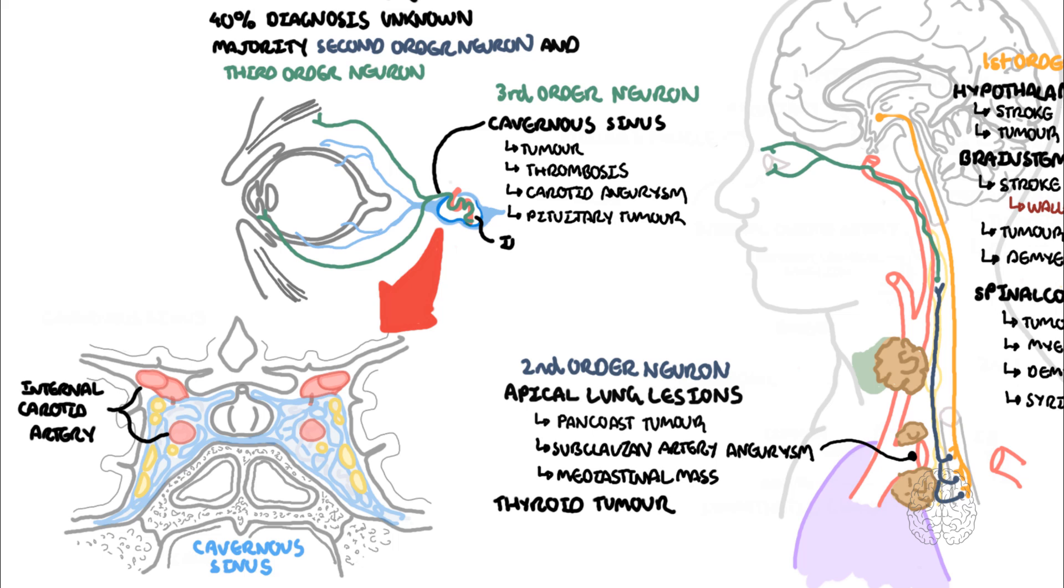Remember, the third-order sympathetic neuron we learned about ascends along the internal carotid artery and passes through the cavernous sinus. And so, if there's a whopping pituitary tumor that can compress or injure the third-order neuron, or if there's thrombosis in the cavernous sinus from infection or procoagulant state that can cause edema and injury to the third-order neuron, you can cause Horner syndrome.